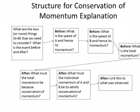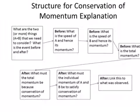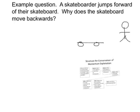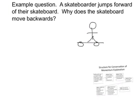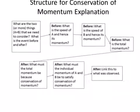Next, we look at the speed of each object and hence its momentum before the event happens. In this case, that's quite easy. Before the skateboarder jumps off, both the skateboard and the skateboarder are stationary, which means they have no speed, which means both have zero momentum. So the total momentum before the skateboarder jumped off must be zero.